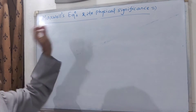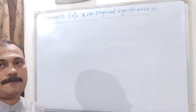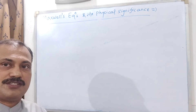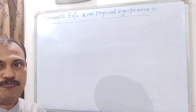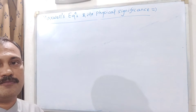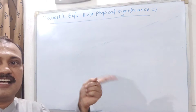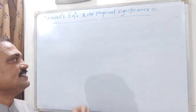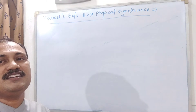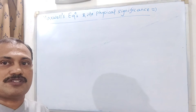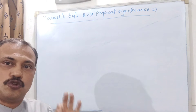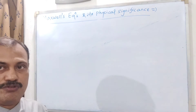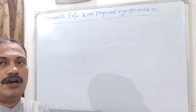Let us now see the Maxwell equations and their physical significance. Maxwell has given four equations, and these four equations are associated with four different laws of physics. The first equation is associated with Gauss's law of electrostatics, the second is Gauss's law of magnetostatics, the third is Faraday's law of electromagnetic induction, and the fourth is the original Maxwell equation where Maxwell showed the existence of displacement current — called the Ampere-Maxwell or modified Ampere equation.